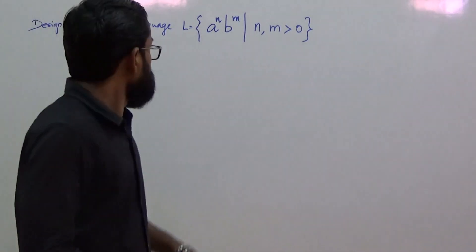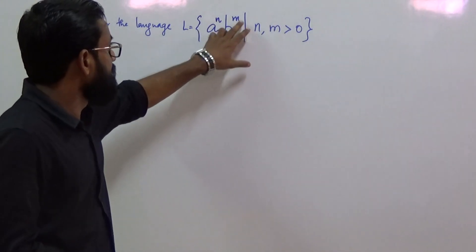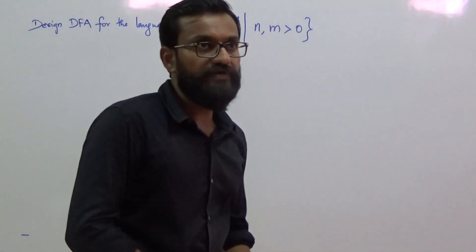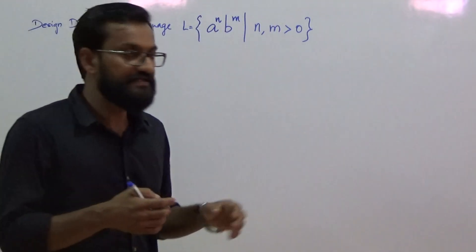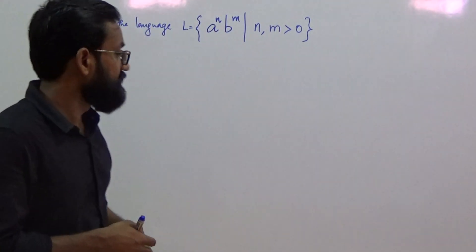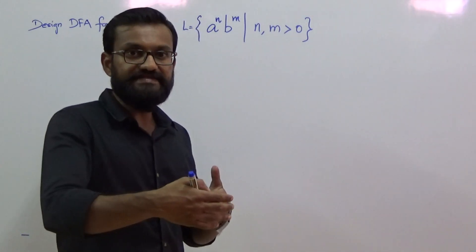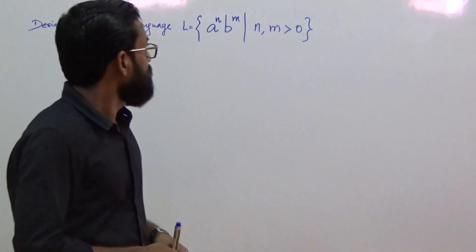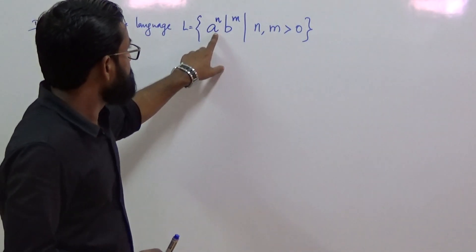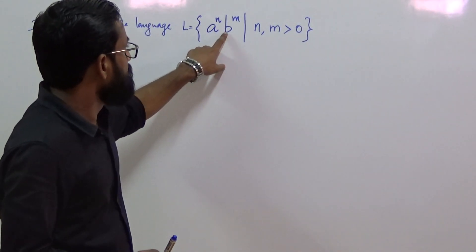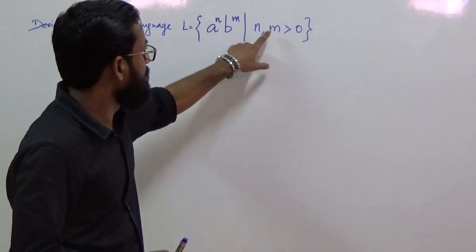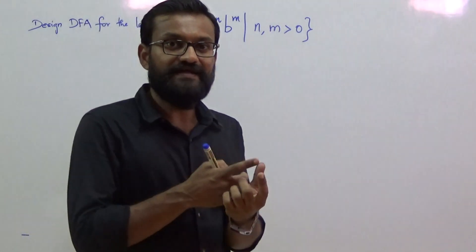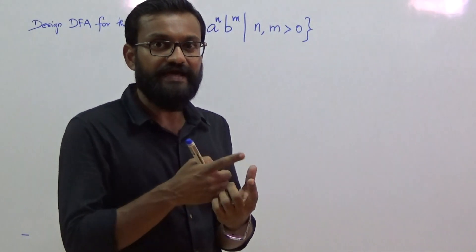Next is to design a DFA for the language L = a^n b^m such that n, m > 0. If we analyze the strings that belong to this language, it contains some sequence of A's followed by some sequence of B's. All A's must precede the first B, and the condition n and m greater than 0 indicates that the string must contain at least one A and one B.